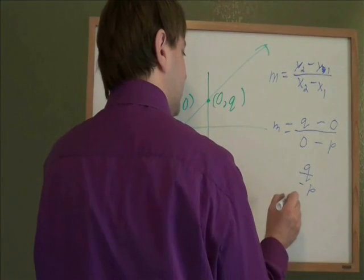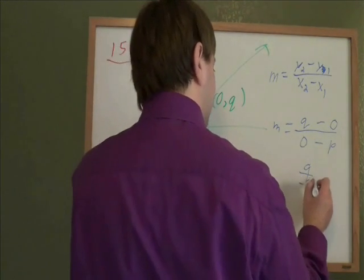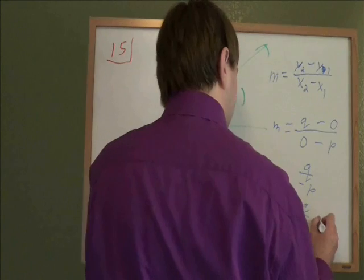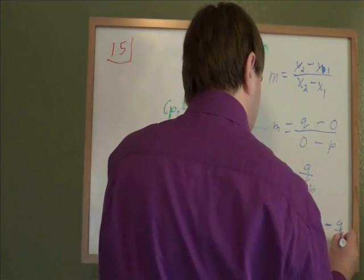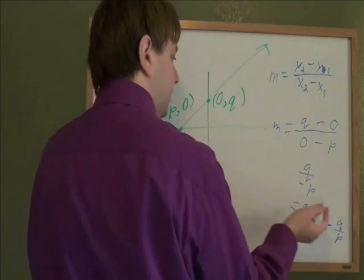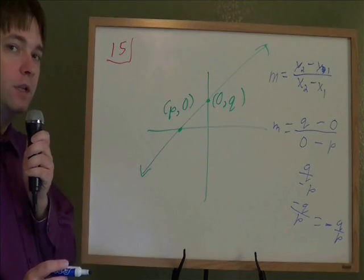So our slope is q over negative p. And remember that with a fraction, you can put the negative on the bottom, or on the top, or just out in front. And all three of these mean the same thing. One negative anywhere is still a negative on a fraction. And that's your answer, negative q over p.